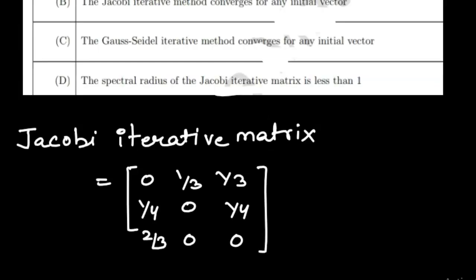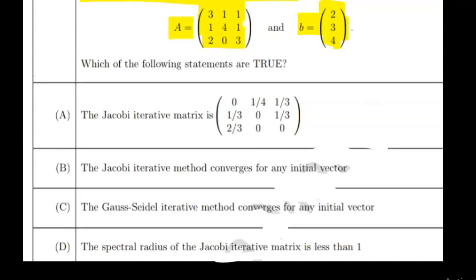So here we have the Jacobi iterative matrix. If we compare with option A, the first row matches with 0, 1/4, 1/3, but here we have 1/4 instead of 1/3 in the second row. This doesn't match, so we can directly discard option A.